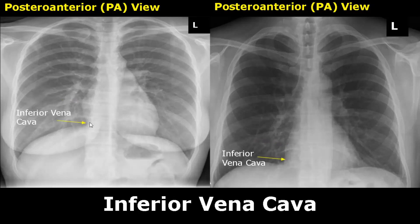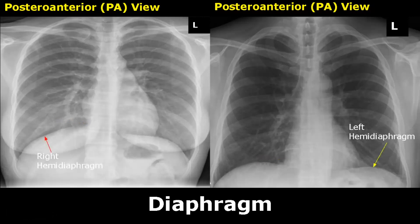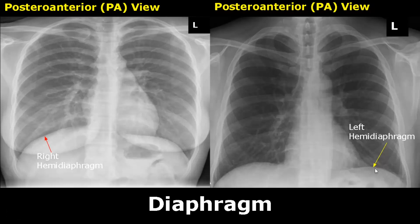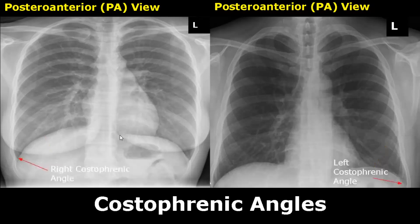This is the location of the inferior vena cava. It is seen at the lower margin of the right heart border. The diaphragm is very easily seen and is dome shaped. The right half of the diaphragm is called the right hemidiaphragm and the left half is the left hemidiaphragm. Here are the costophrenic angles, formed at the point where the chest wall meets the diaphragm.